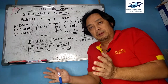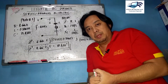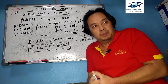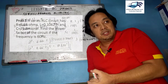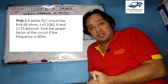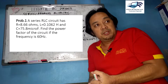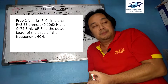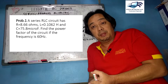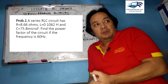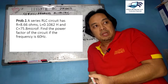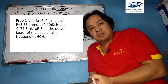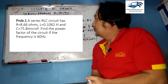Before we solve the problem, we need to read it first. This is Problem 1: A series RLC circuit has a resistance R equal to 8.66 ohms, L equal to 0.1062 henry, and C equal to 75.8 microfarads. Find the power factor of the circuit if the frequency is 60 hertz.